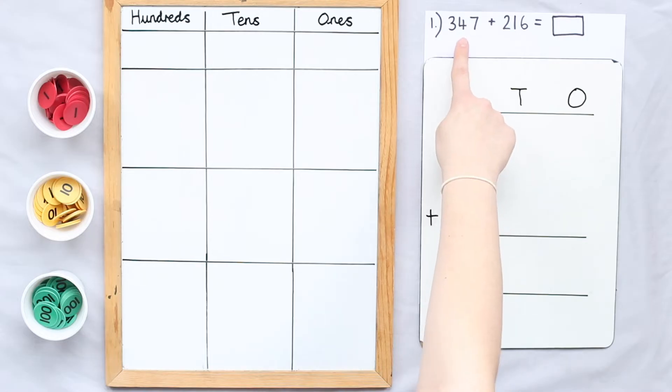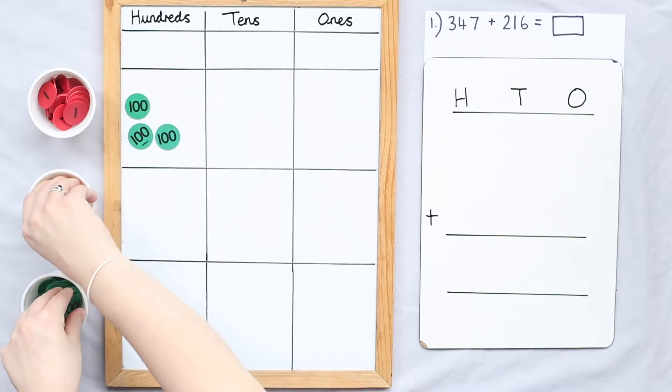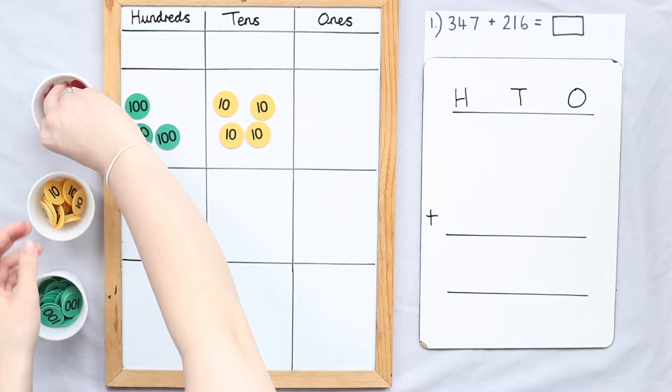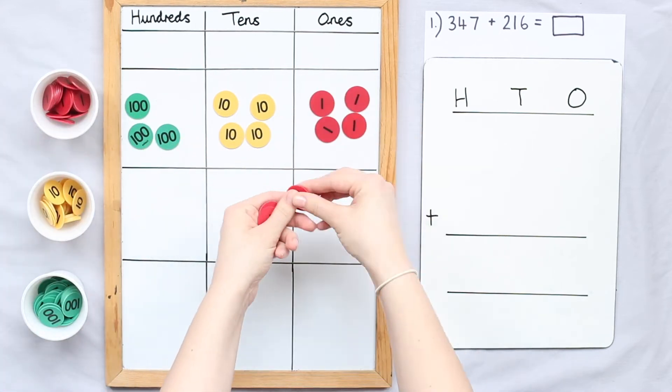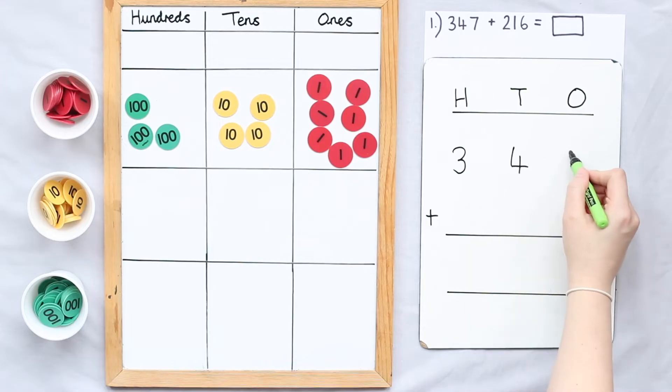We're going to start by partitioning our first addend 347 into hundreds, tens and ones. We have three hundreds, four tens and seven ones. Now I'm going to record this in my algorithm. I have three hundreds, four tens and seven ones.